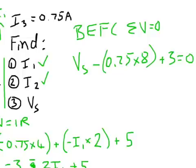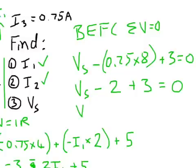So if we rearrange that, well let's just write it down in full. VS minus 2 plus 3 equals 0. And this means VS equals 1 volt.